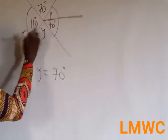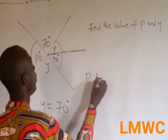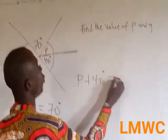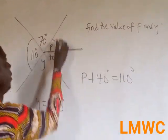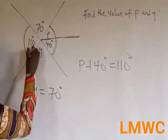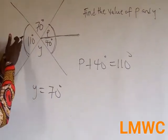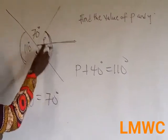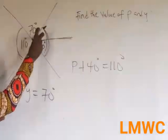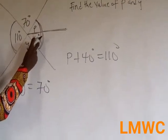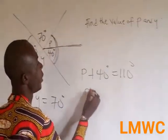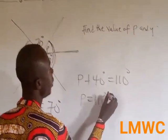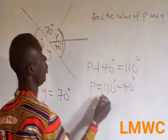It becomes P plus 40 degrees is equal to 110 degrees. Vertically opposite angles are equal. This means if this portion is 110, this portion too is 110. But they give you only 40. So what should be added to this for us to get 110? It becomes 110 minus 40. So P is equal to 70 degrees.